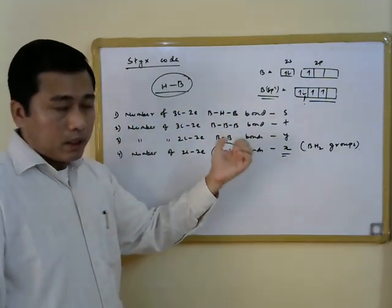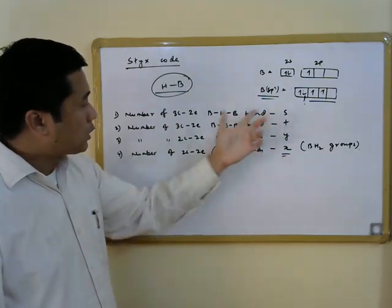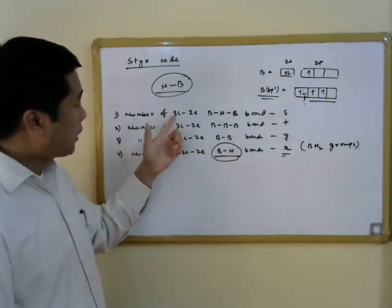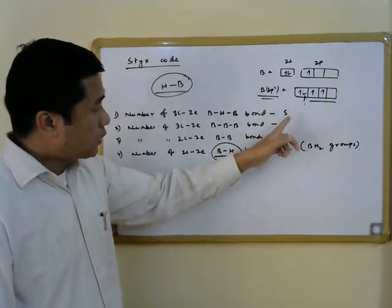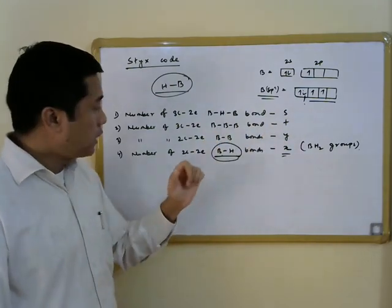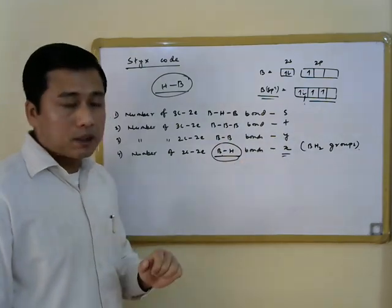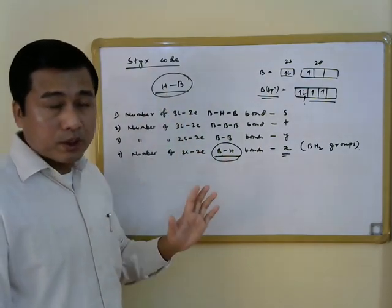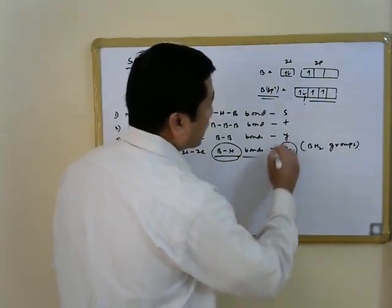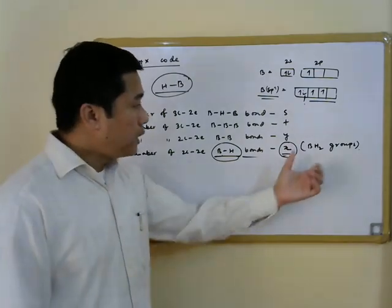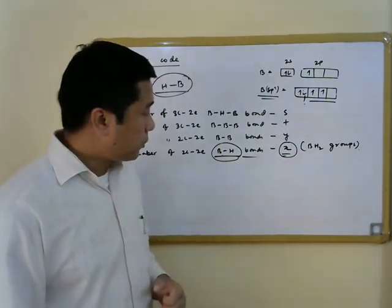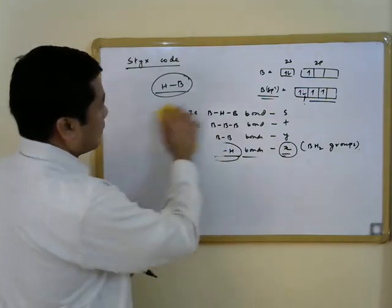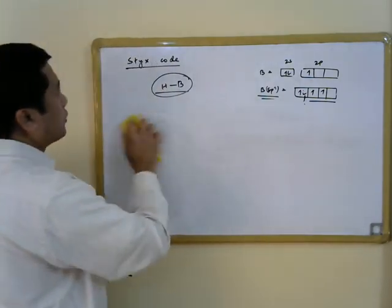So the STYX code denotes the number of different types of bonds in a given borane molecule: s for three-center two-electron B-H-B bonds, t for three-center two-electron B-B-B bonds, y for two-center two-electron B-B bonds, and x for the extra B-H bonds above the assumed terminal ones — which equals the number of BH2 groups present.